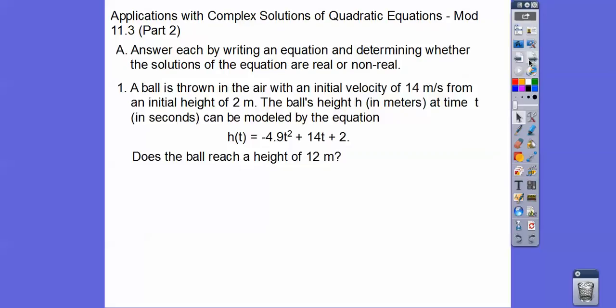A ball is thrown in the air with an initial velocity of 14 meters per second from an initial height of 2 meters. So this is always your initial velocity right here. This is always the initial height right here, the initial position right here.